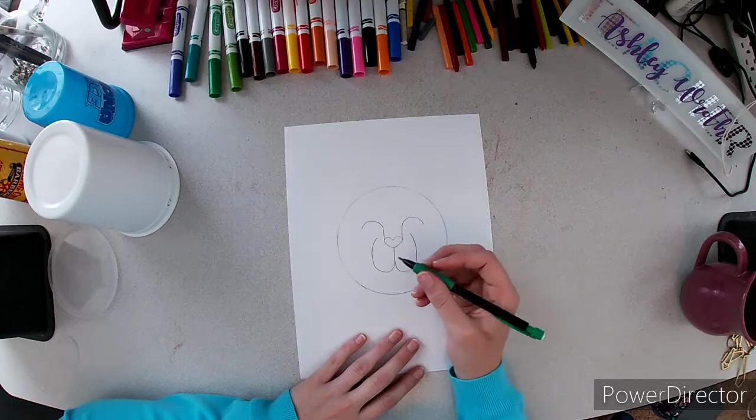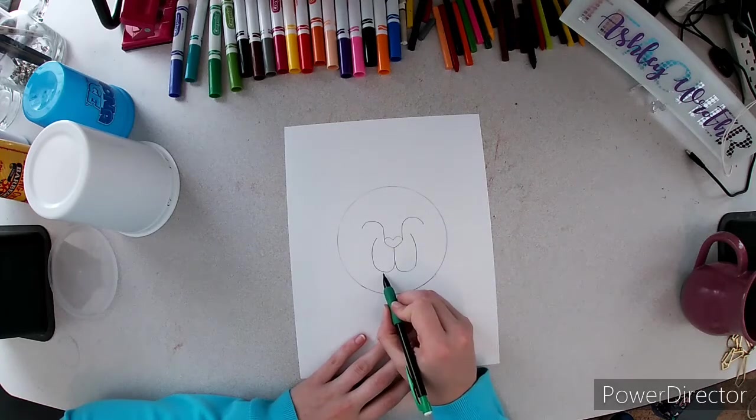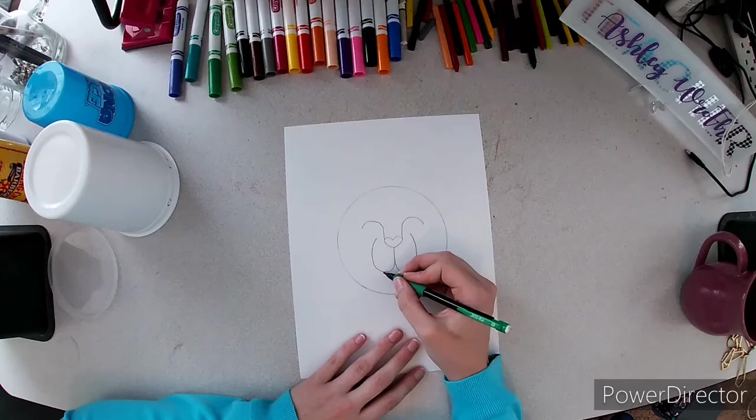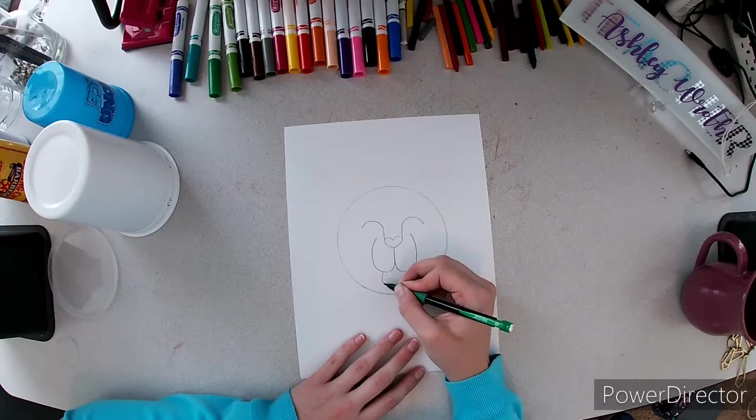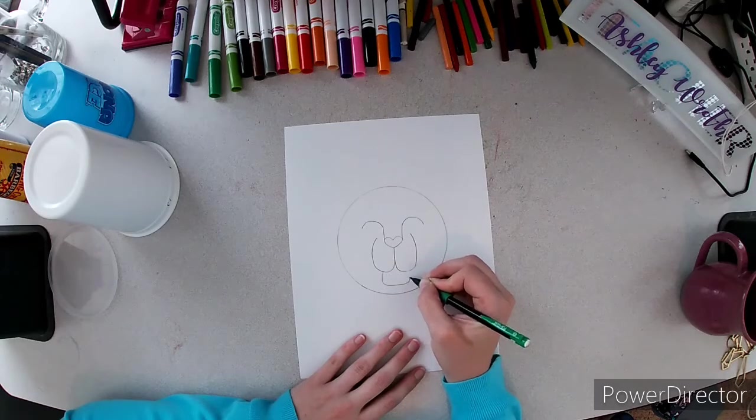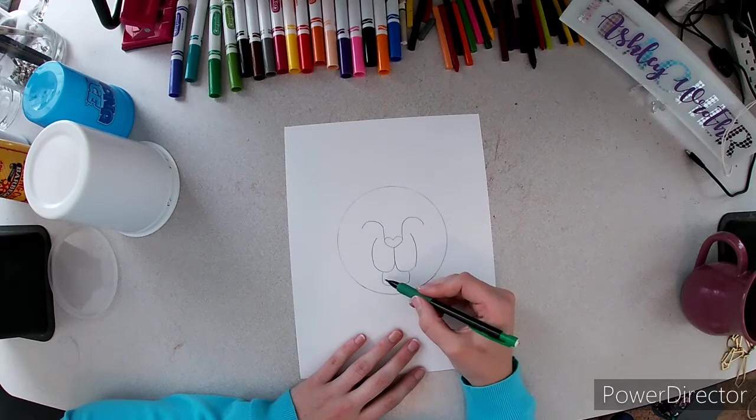Now for our tiger's chin. We're going to start at the bottom of this. Down curve across and back up. So it's kind of like the letter U.